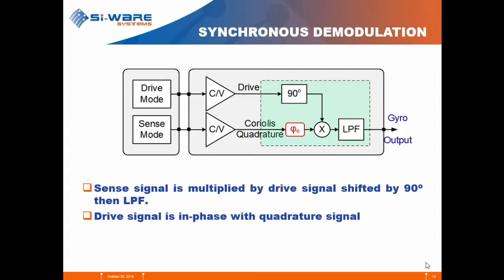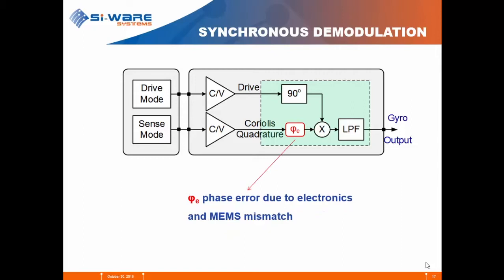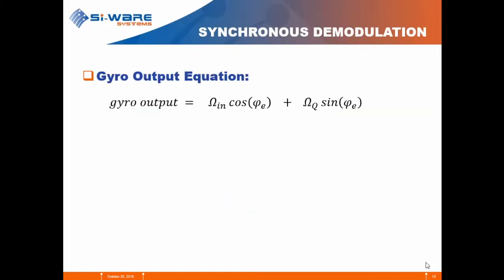This leads ideally to cancellation of the quadrature while the Coriolis signal passes. There is no feedback loop, so no stability requirements, which is good. However, it requires a large dynamic range from the front end of the sense electronics to accommodate both the Coriolis and quadrature signals, requiring more power consumption and causing low MEMS yield since large quadrature parts will be rejected. It is also sensitive to phase error phi_e, which is the combined phase error due to electronics and MEMS mismatches.